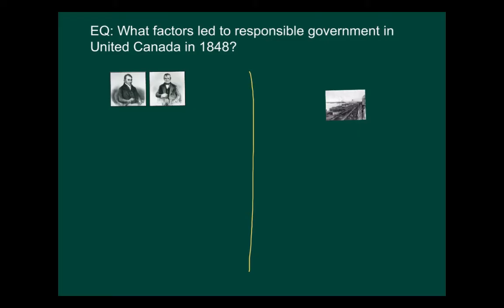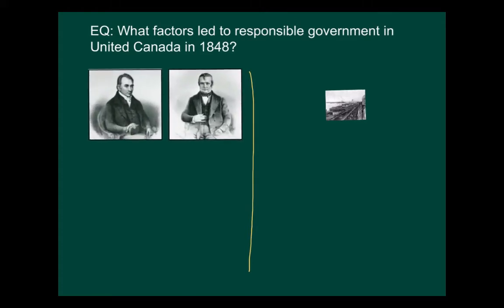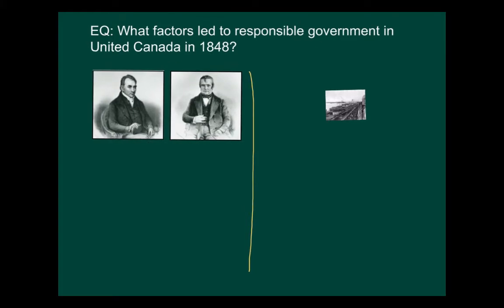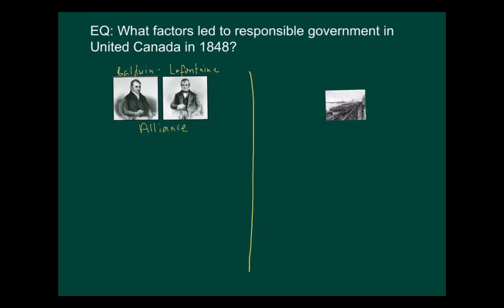Let's look to answer our essential question by talking about some of the factors that would eventually lead to responsible government. Two gentlemen, Baldwin and La Fontaine, were two political leaders who in 1841 decided to join forces and form an alliance, meaning they agreed to work together. Baldwin was the leader in Canada West; La Fontaine was the leader in Canada East of the English and French reformers — the ones who wanted change in government.